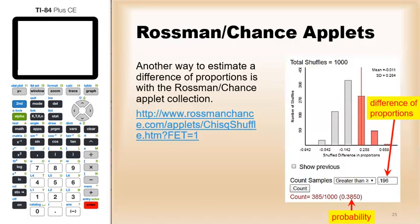Instead of just using cards to simulate a difference in proportions, we can do it much faster by using computers and computer software, such as the Rossman Chance Applet Collection.